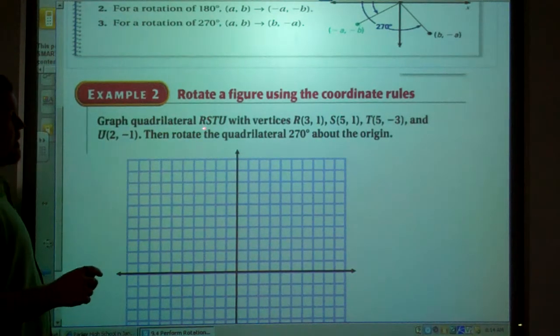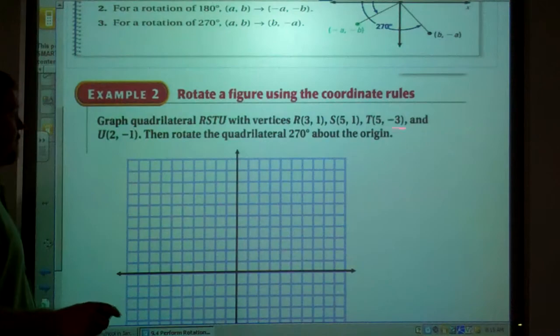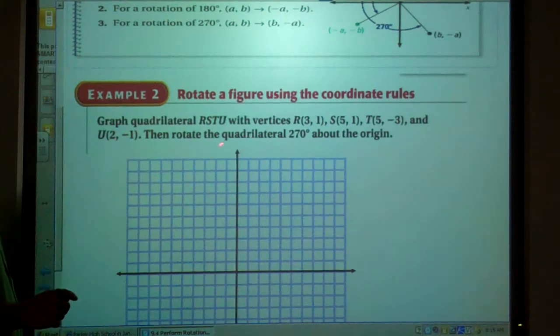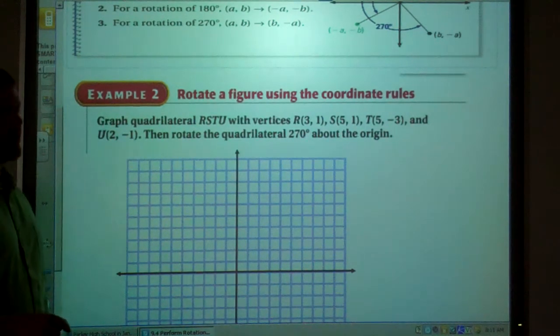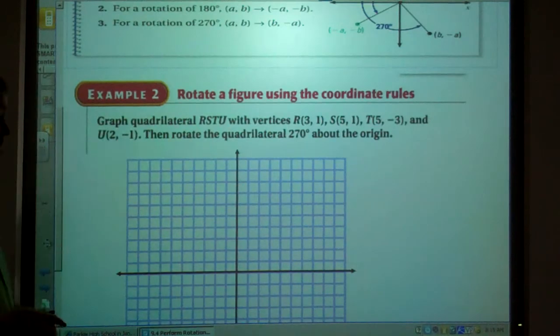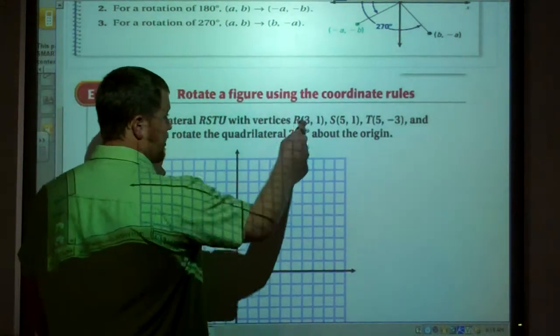Graph quadrilateral RSTU with vertices (3, 1), (5, 1), (5, -3), and (2, -1). Then rotate the quadrilateral 270 degrees about the origin. So we're going to graph this quadrilateral.